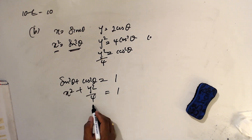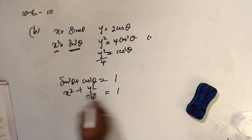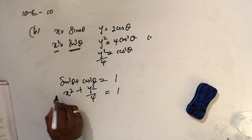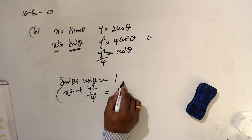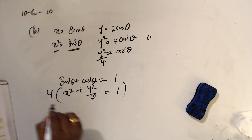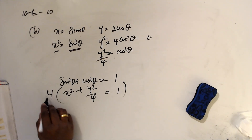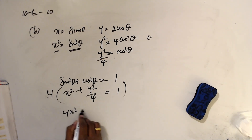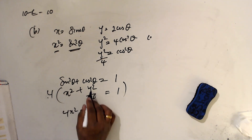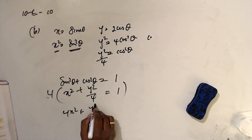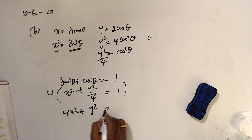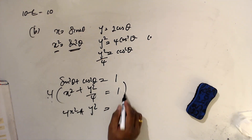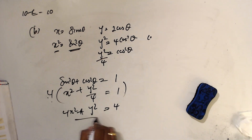To simplify, multiply everything by 4: 4x² + y² = 4.